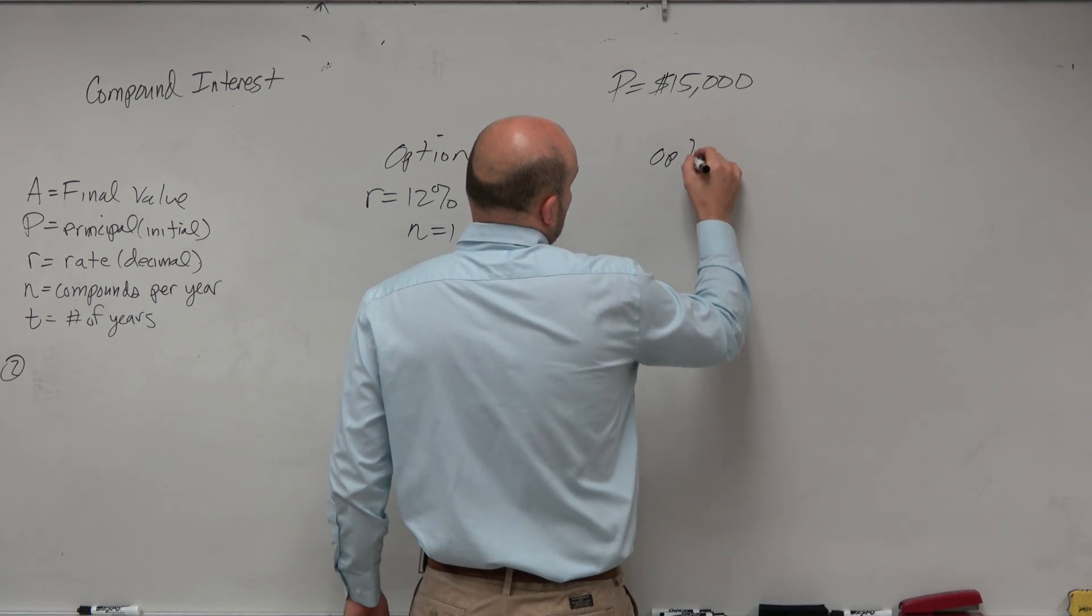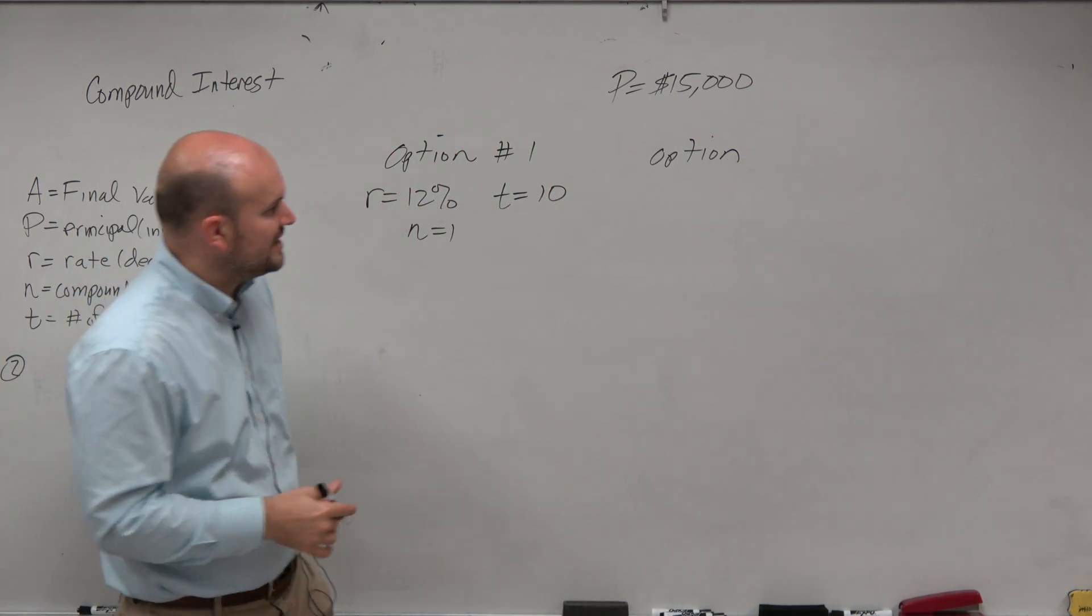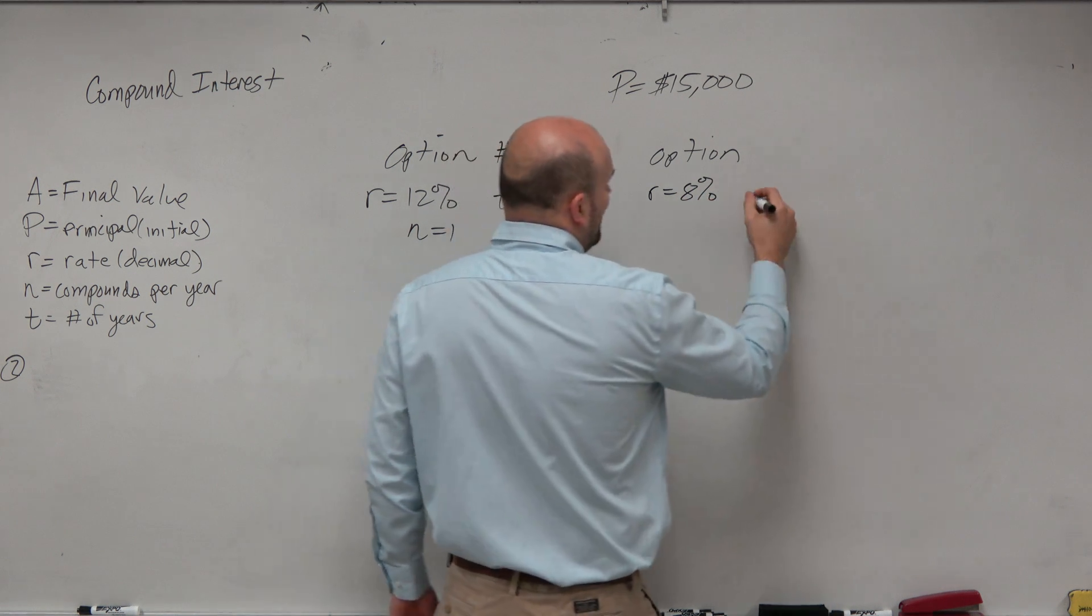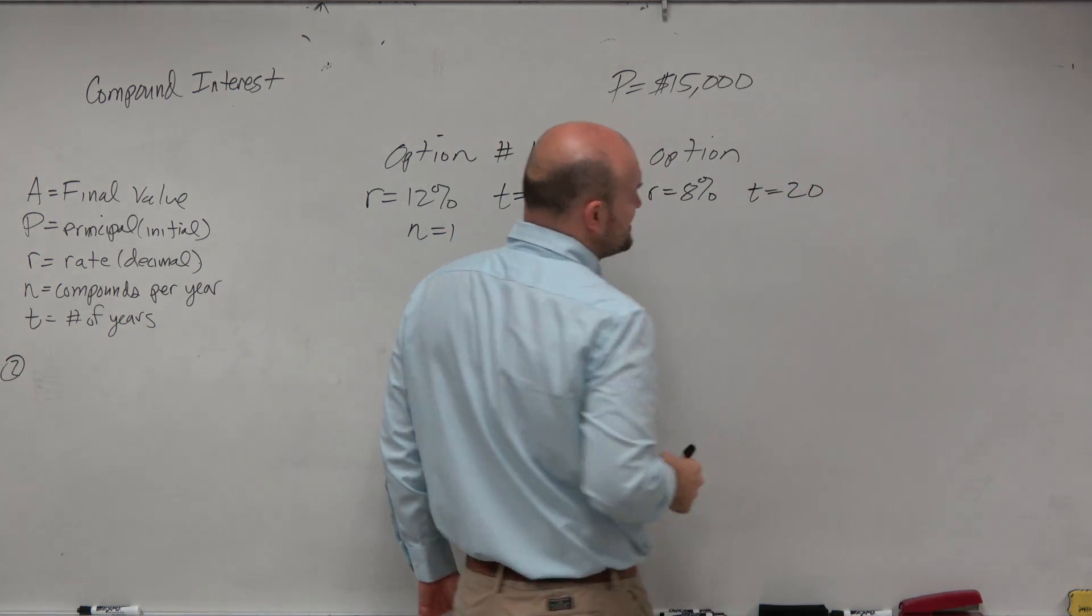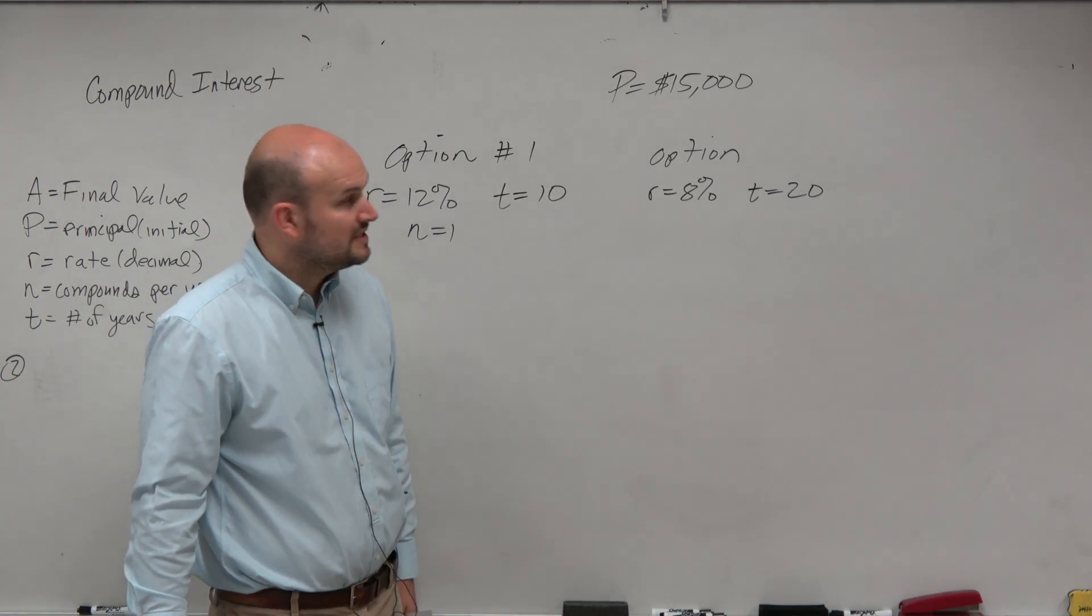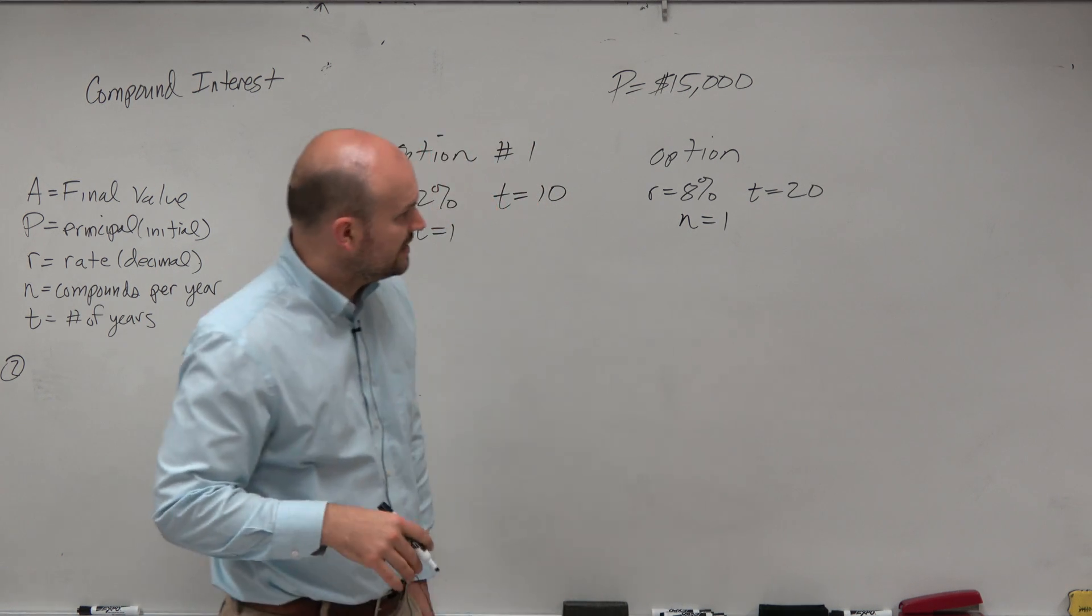Option number two is an account that's a little bit more standard, kind of middle of the road. Your rate is going to be 8%, so you're dropping your rate. But that's a little bit more consistent rate. So therefore, your time is going to be 20. And n is going to be 1, that means it's only going to be compounded once a year.